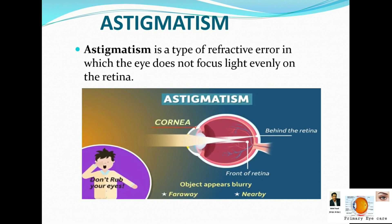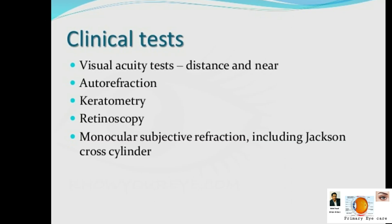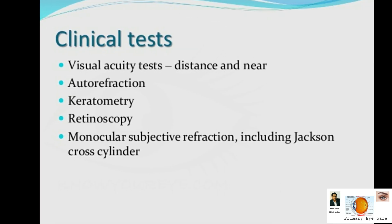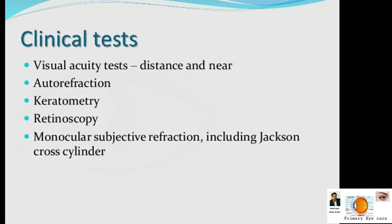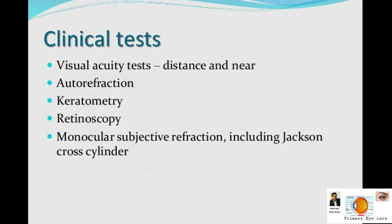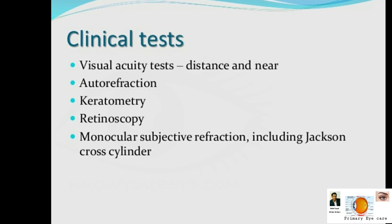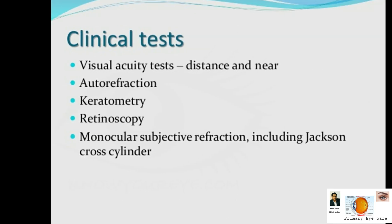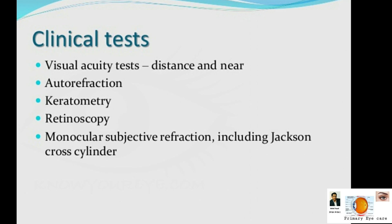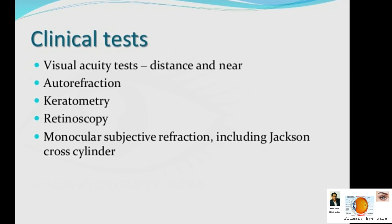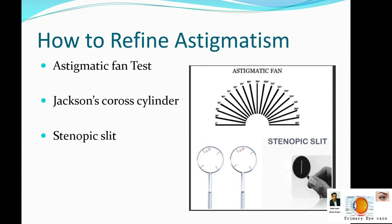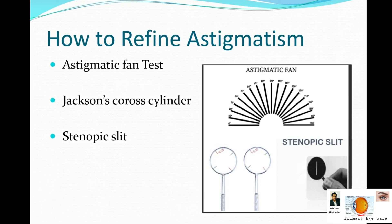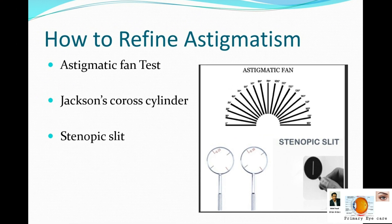What are the clinical tests available? First, we do the visual acuity test for distance and reading. Second is the auto refractometer, which is an objective test. Third is keratometry, fourth is retinoscopy, and fifth — most importantly — is the subjective test. We can refine the cylindrical axis through the Jackson cross cylinder, the astigmatic fan test, and the stenopaic slit.